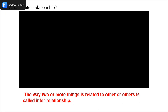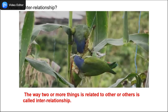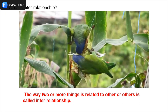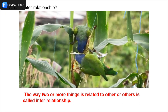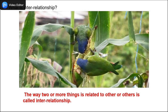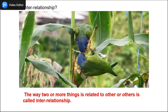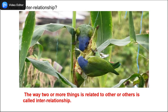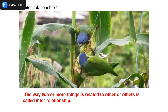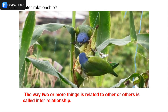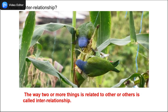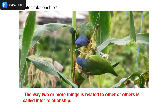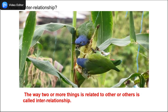Let's see another example of interrelationship. The parrots eat corn from the plants — they get food — and they also help the plant. How? They disperse the seeds of corn through their droppings, helping the plants to grow.